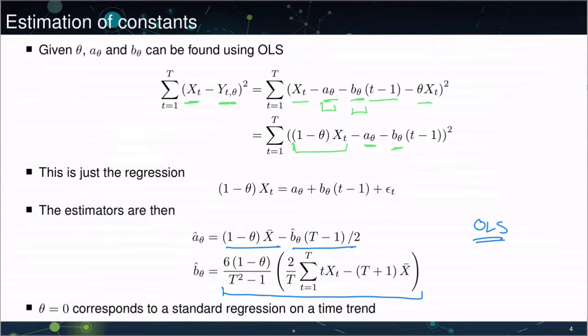So in practice, when you want to estimate alpha hat of theta and b hat of theta, you're simply going to construct the matrix 1, 1, 1, 1, 1, and then 0, 1, 2, all the way through capital T minus 1. Those are the two things you regress on, and the coefficients you get from that OLS will be a and b.